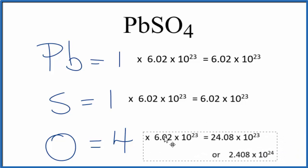So we're going to multiply four times Avogadro's number. So this is how many oxygen atoms we have in one mole of lead two sulfate.